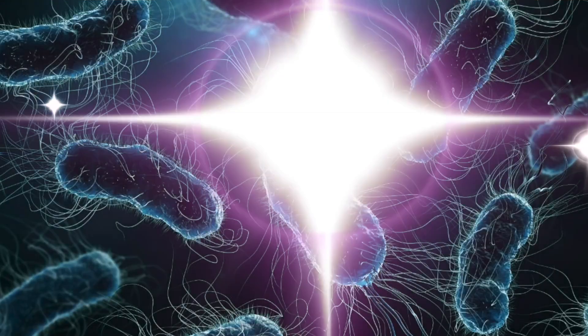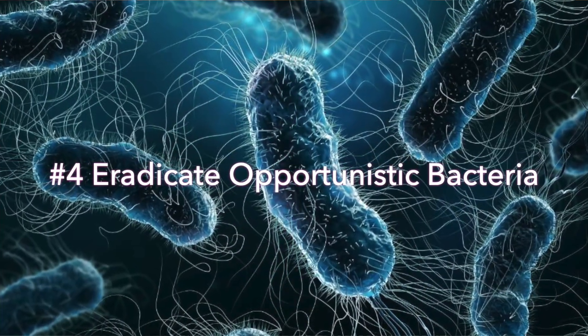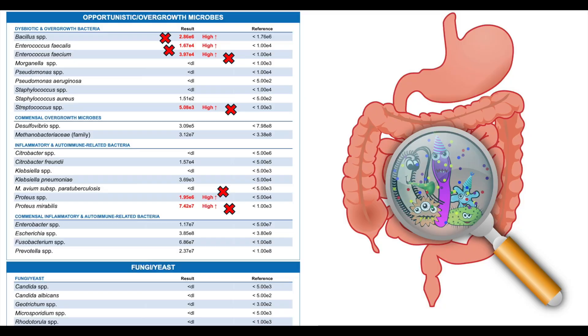Number four: get rid of histamine-producing opportunistic bacteria. If you have opportunistic histamine-producing bacteria like Klebsiella, Morganella, or Proteus species, you need to work with a certified functional medicine doctor who knows how to eliminate these bacteria. Studies have shown these species not only produce biofilms — which makes treatment difficult — but are also high histamine-producing bacteria.